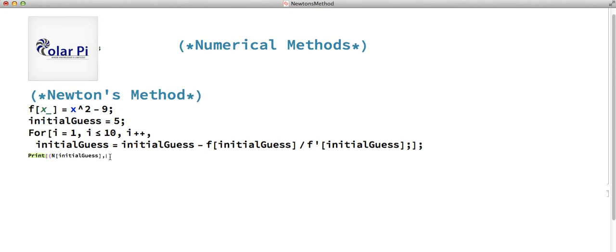And we would also like to know the value of the estimate when plugged into F. Because it should be close to zero, very close to zero, right? So we'd like to know F of initial guess.